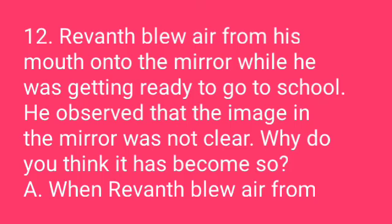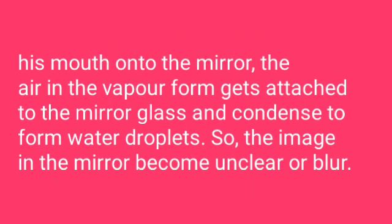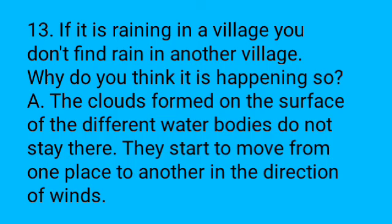Twelfth question: Raven blew air from his mouth onto the mirror while getting ready for school. He observed that the image in the mirror became unclear — why? Answer: When Raven blew air from his mouth onto the mirror, the air in vapor form gets attached to the mirror glass and condenses to form water droplets, so the image in the mirror becomes unclear or blurry.